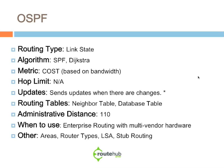The administrative distance for OSPF is 110. You use OSPF for enterprise routing, especially when you have multi-vendor hardware — for example, if you have both Juniper and Cisco equipment, OSPF is recommended. There are many additional OSPF components not covered here, including areas, different router types, different LSA types, and stub routing, which is recommended for access or WAN branch connections.